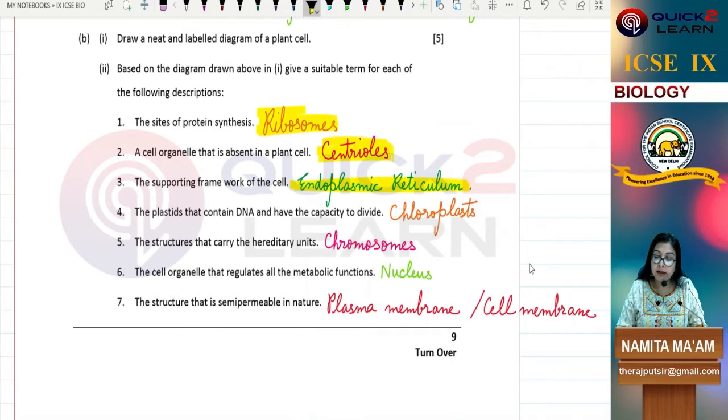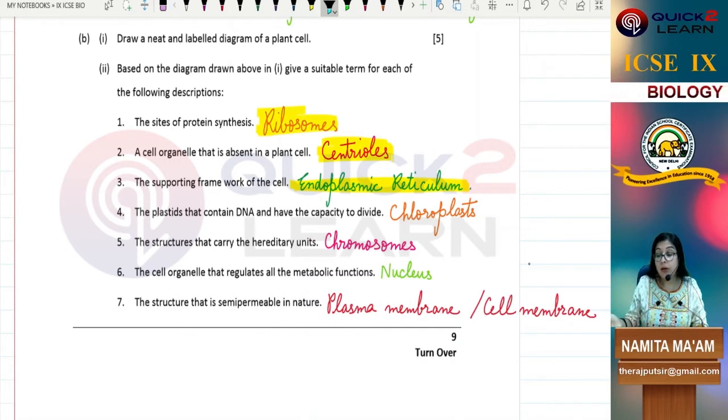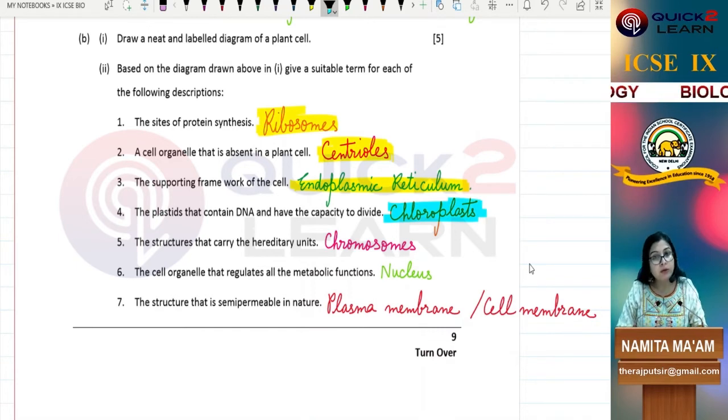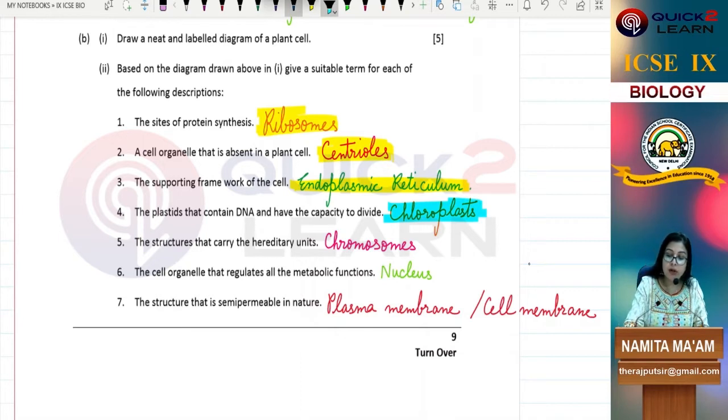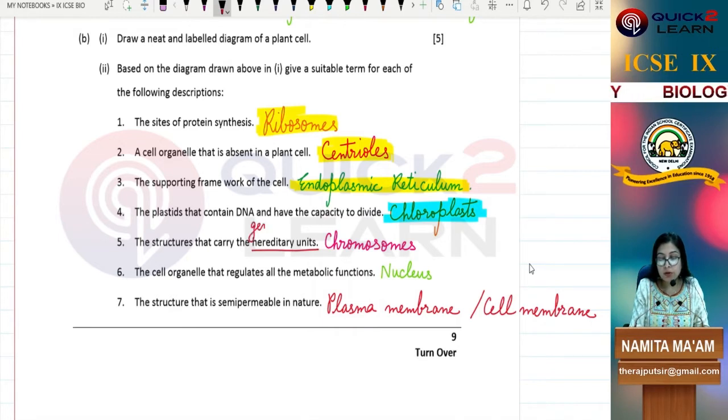The plastids that contain DNA and have the capacity to divide. Which are the plastids? Chloroplast, leucoplast, chromoplast. The structures that carry the hereditary units. Hereditary units are the genes.